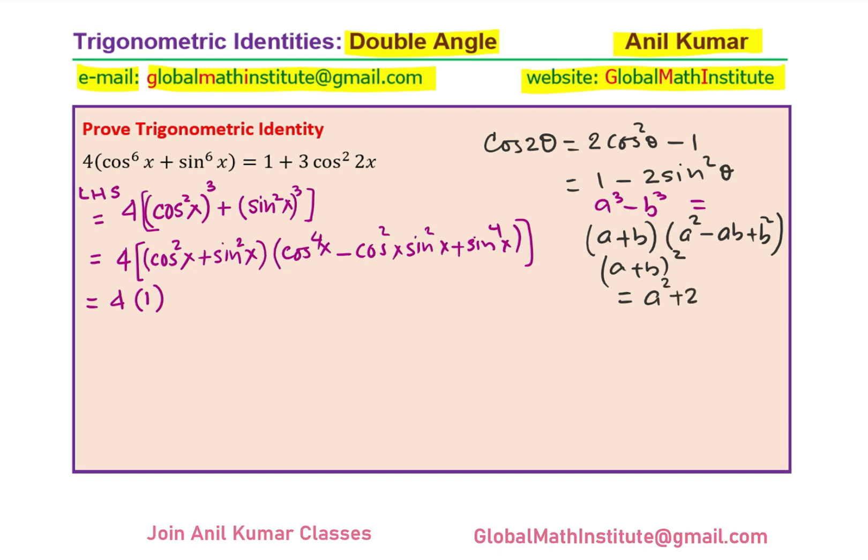What is A plus B whole square equals to? That is A square plus 2AB plus B square. So we have cos square as a square, cos to the power of 4x and sin to the power of 4x. So what I will do here is rearrange. We will have cos to the power of 4x plus sin to the power of 4x. I am going to add 2 cos square x sin square x. Since I have added, I have to subtract also, so I will subtract 2 cos square x sin square x. Adding and subtracting same term really doesn't change anything. And we already have minus cos square x sin square x.